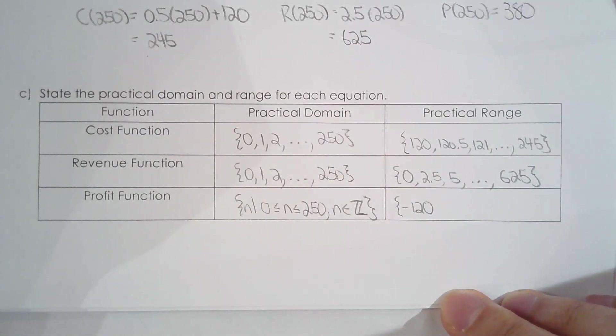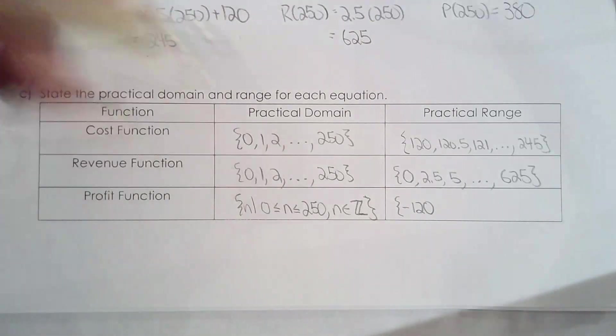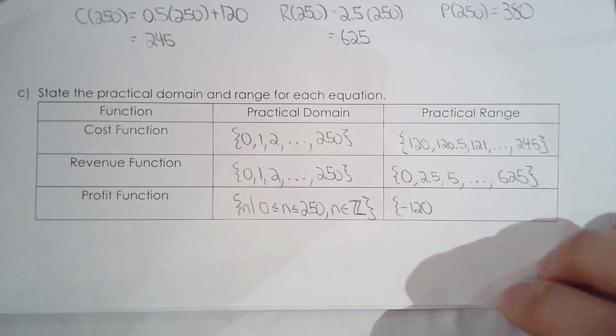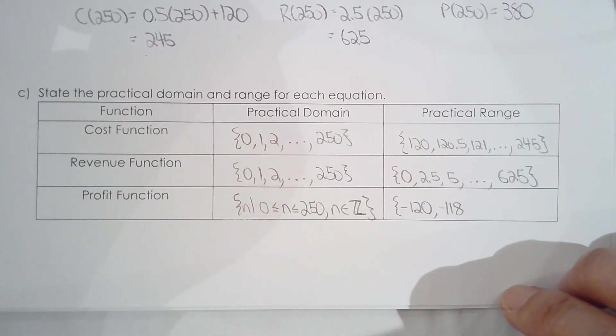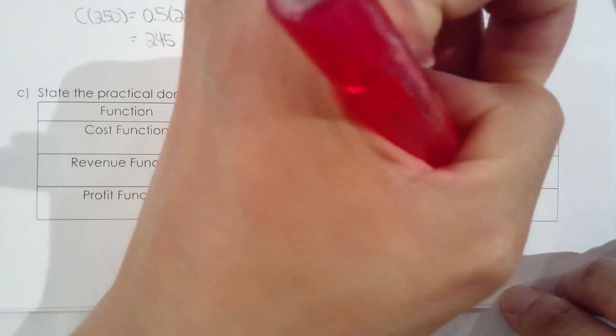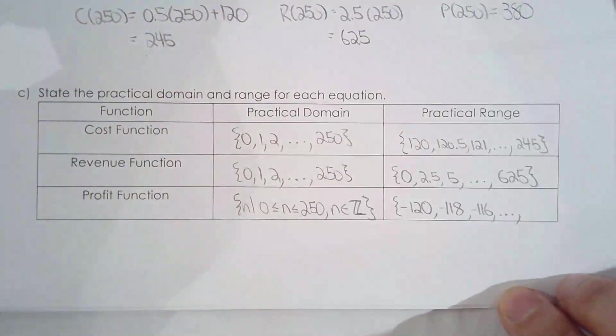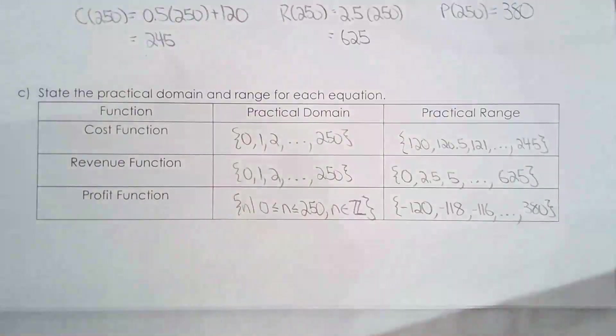Now, the profit, this is the scary part. If you don't end up selling any hot dogs that day, you have lost 120 dollars. That's the risk you take when you're opening up a business. You're running a risk of losing quite a bit of money. So negative 120. But the good news is every additional hot dog, you are making a profit of two dollars. And the best case scenario, which we solved for earlier, is $380.